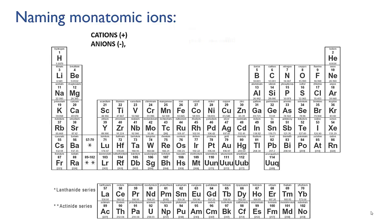First let's look at simple monatomic ions. Monatomic means made of one atom so a monatomic ion is simply an atom that has either lost some electrons and become a positively charged cation or it's gained some electrons and become a negatively charged anion.